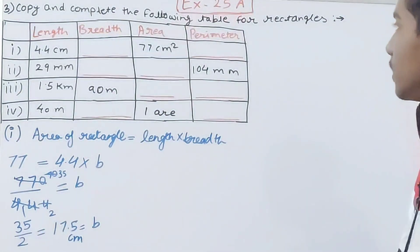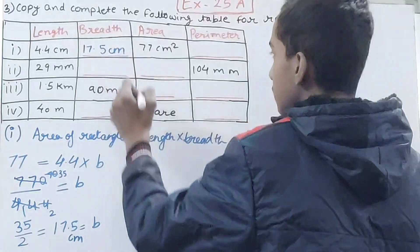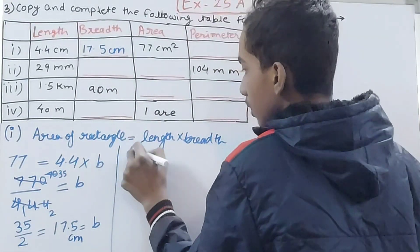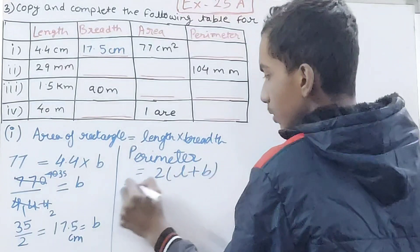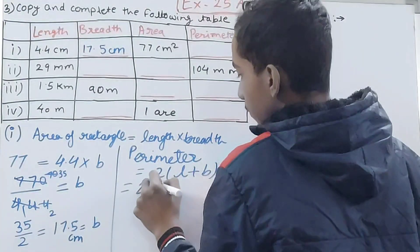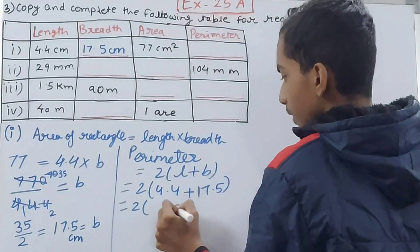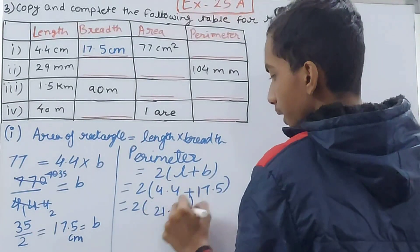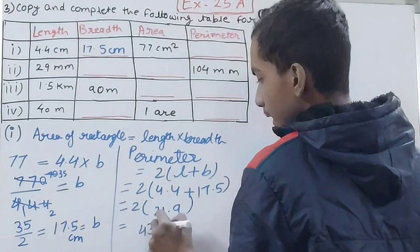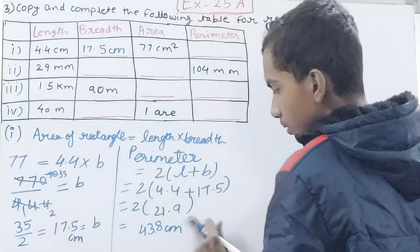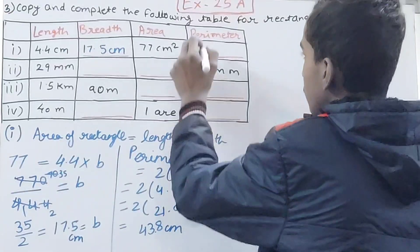So the breadth is 17.5 centimeters. Now we need the perimeter. Perimeter = 2 × (l + b) = 2 × (4.4 + 17.5) = 2 × 21.9 = 43.8 centimeters. That is the perimeter of the first rectangle.